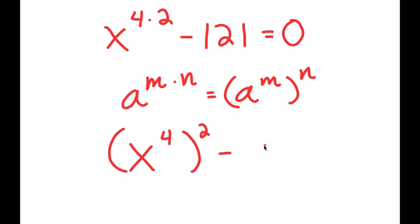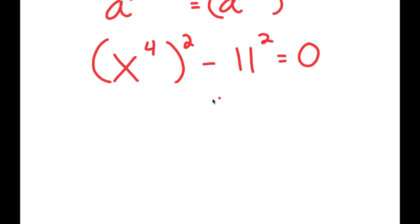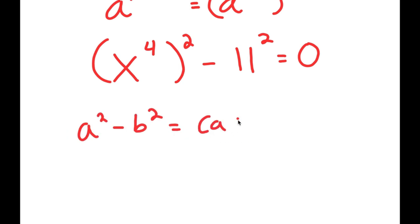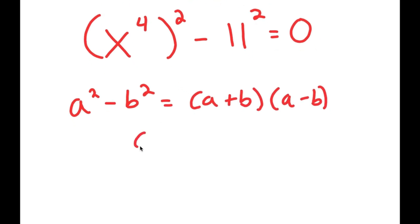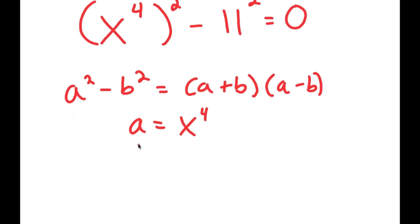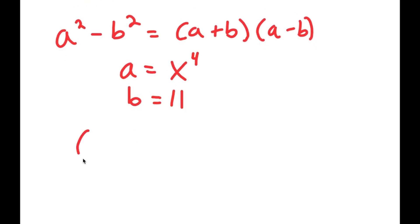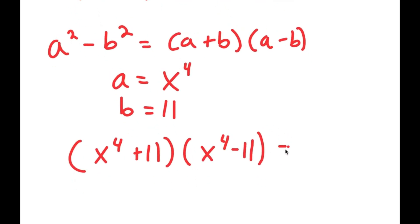Now, this minus 121 we can rewrite as 11 to the power of 2. The reason we do that is so we can use the important algebraic property that states if I have something in the form a squared minus b squared, this is equal to a plus b times a minus b. In this case, a is x to the power of 4 and b is 11. So I get x to the power of 4 plus 11, times x to the power of 4 minus 11, which is equal to 0.